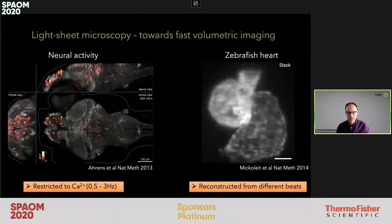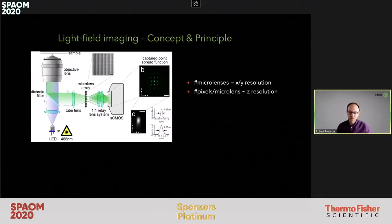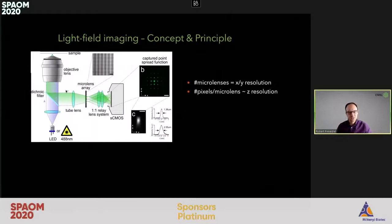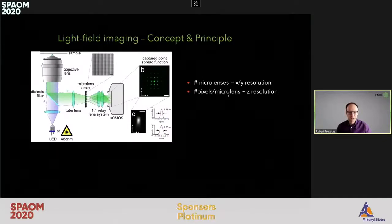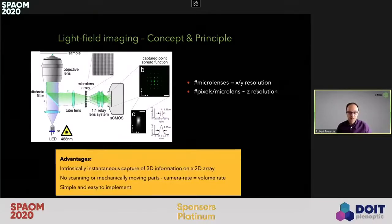This is exactly where light field microscopy can provide a fundamental advantage. In light field microscopy, we rely on measuring both the lateral and angular information of the light emitted by the sample. This can be achieved by introducing a microlens array into the imaging path of a conventional epifluorescence microscope. This microlens array gives access to both angular and depth information of the sample, where the number of microlenses translates to the lateral resolution, and the number of pixels behind one microlens defines the axial resolution.